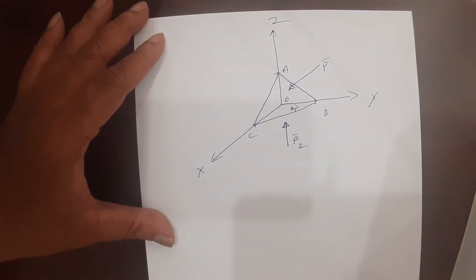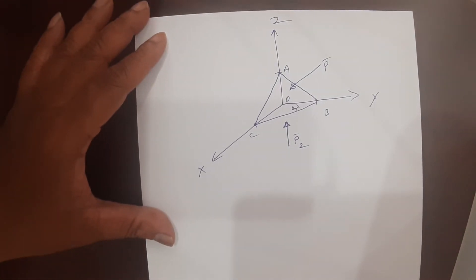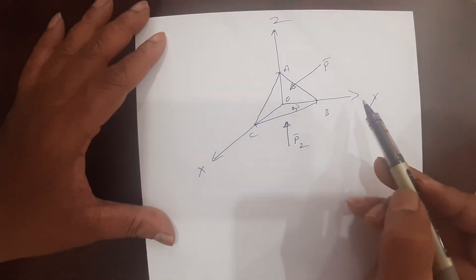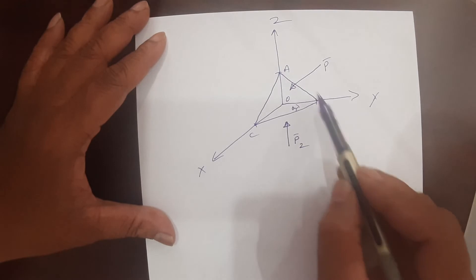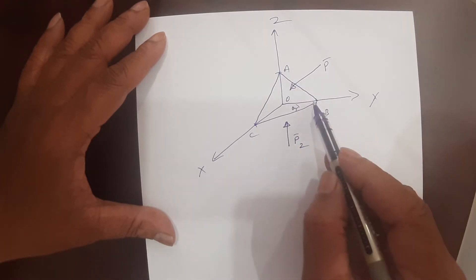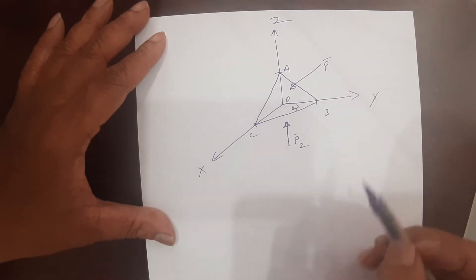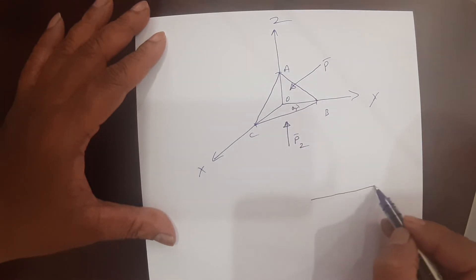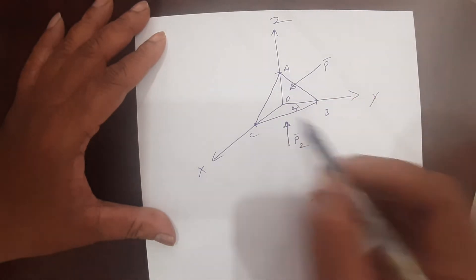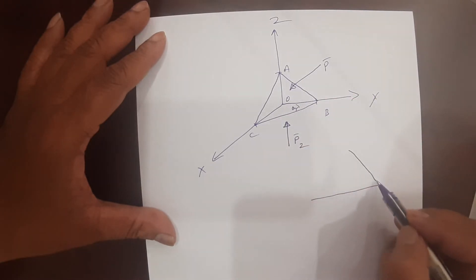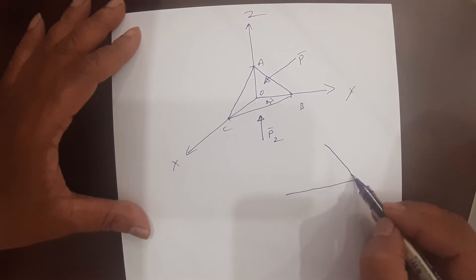As you know, this is a static fluid, so the summation of forces acting in a particular direction is equal to zero because there is no movement. First, let us try to resolve these equations. P-bar on plane ABC makes an angle theta with the COB plane. This angle is given as theta.